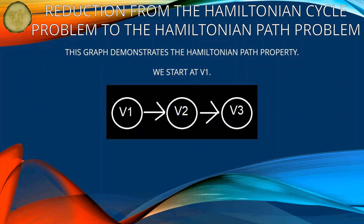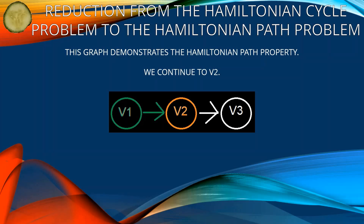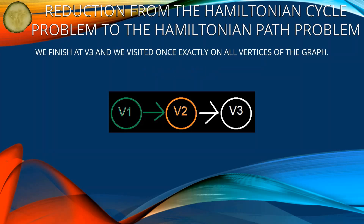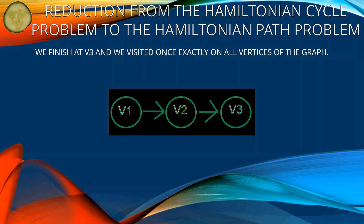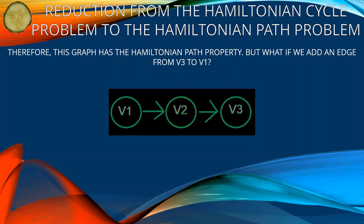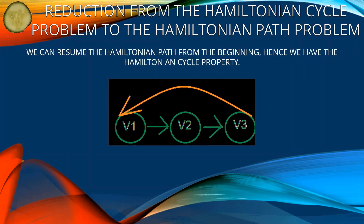Let's see an example. This graph demonstrates the Hamiltonian path property: we start at v1, continue to v2, and finish at v3, visiting each vertex exactly once. Therefore this graph has the Hamiltonian path property. But if we add an edge from v3 to v1, we can resume the path from the beginning — hence we have the Hamiltonian cycle property.